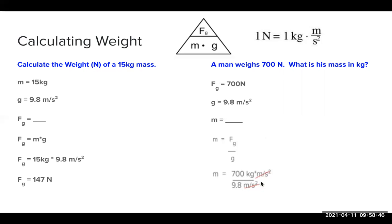I can substitute like this, which allows me to cross cancel my meters per second squared away because I have one on top and one on bottom, leaving me with kilograms, which is what I want since I'm solving for mass. That's going to give me an answer of 71.43 kilograms as my final answer.